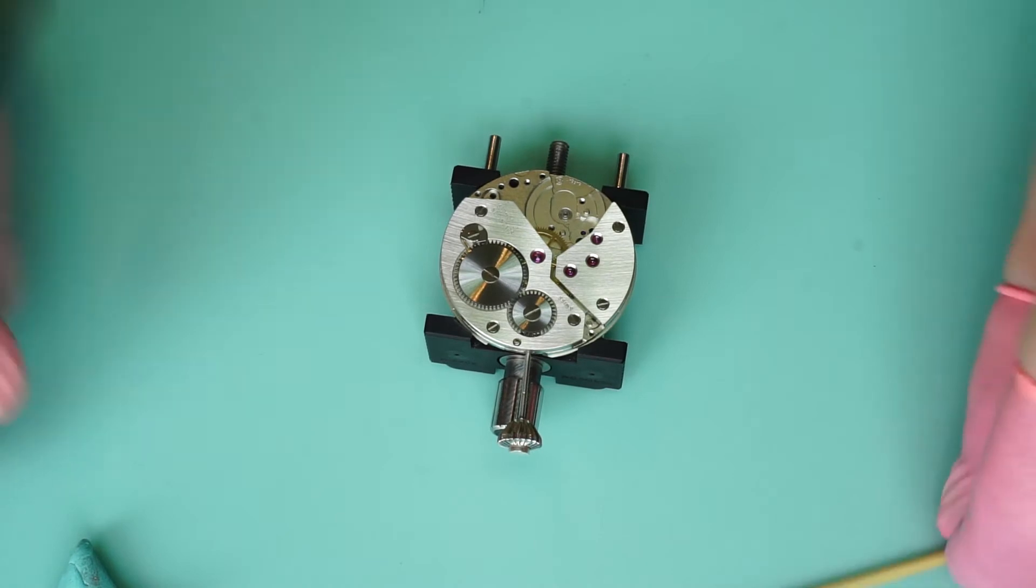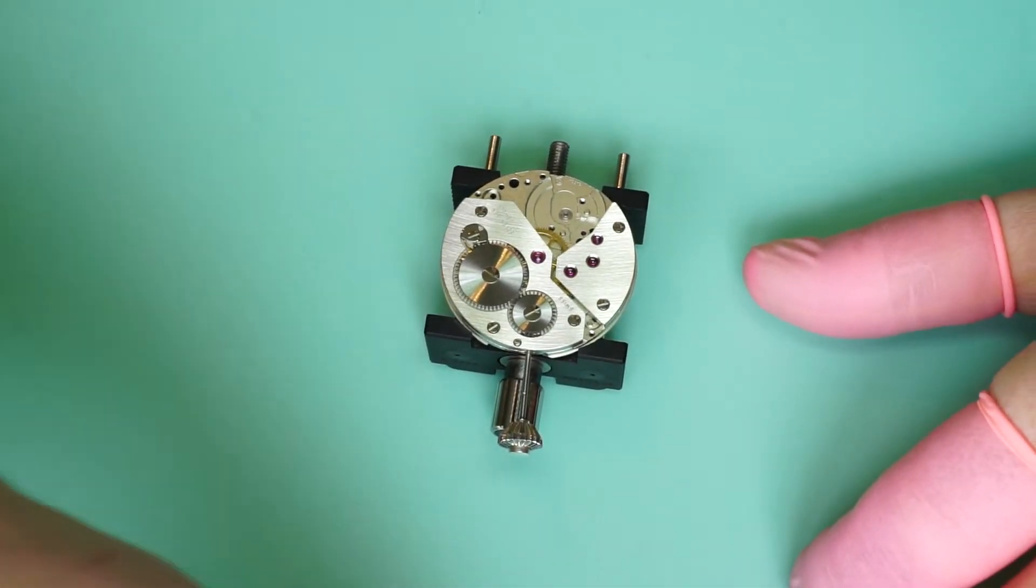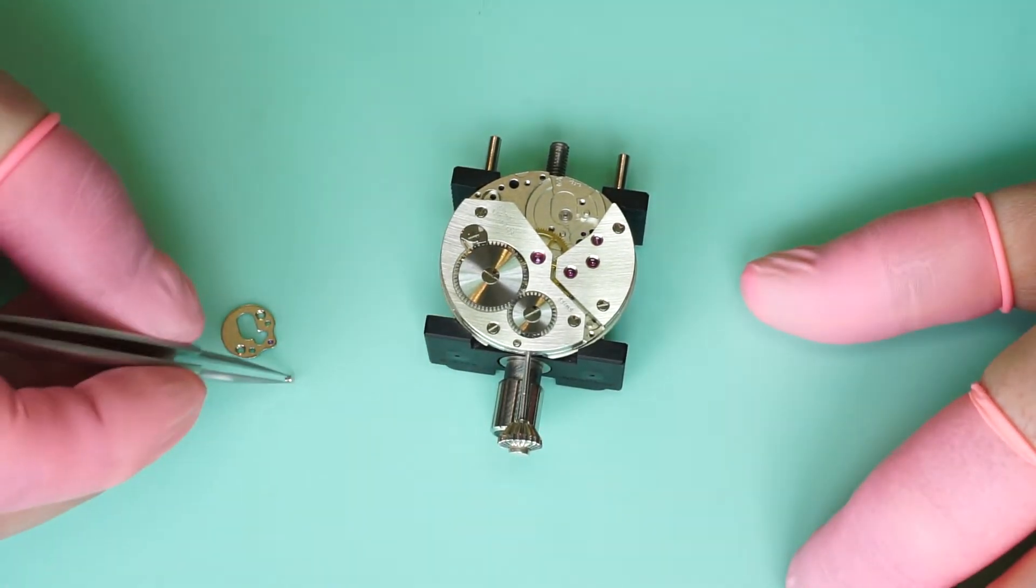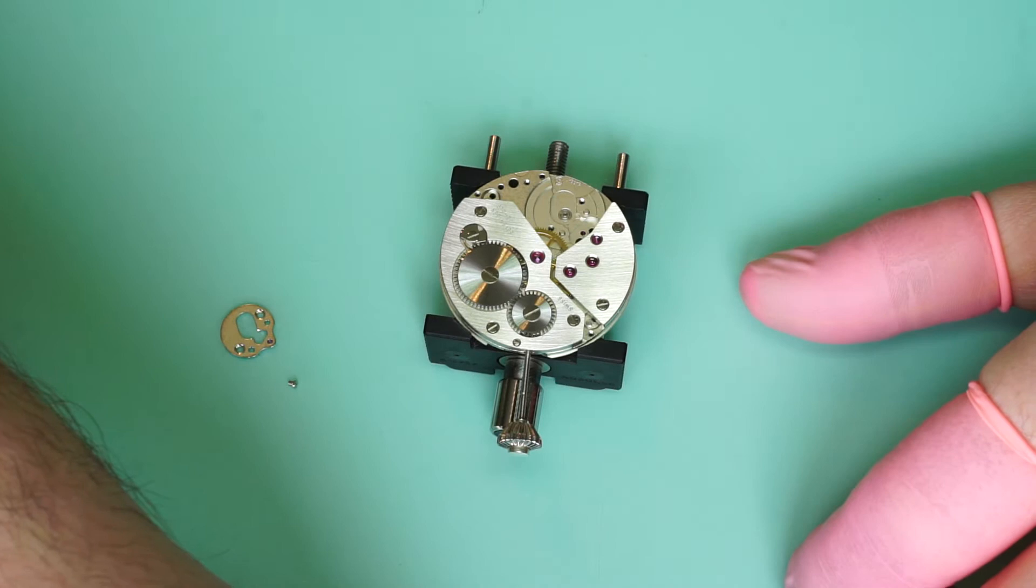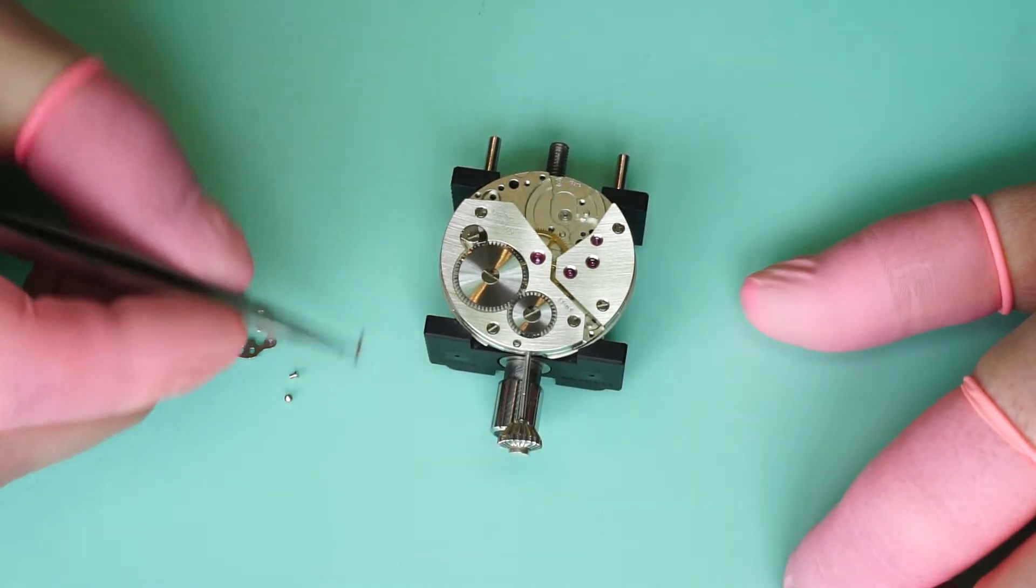Put it back in the movement holder. Now the next stage, which is the final kind of process, is we're going to lubricate the pallets and fit them. So these are the pallets.